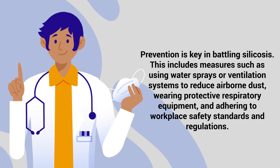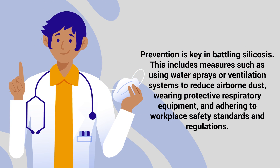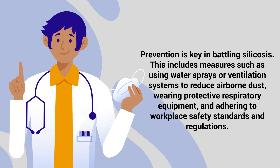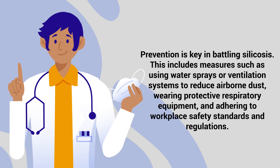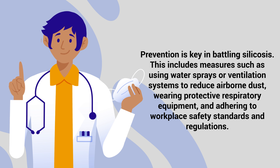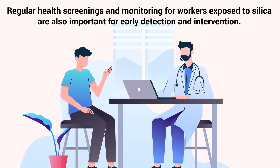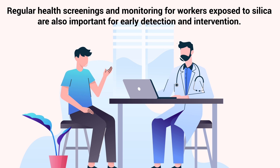Prevention is key in battling silicosis. This includes measures such as using water sprays or ventilation systems to reduce airborne dust, wearing protective respiratory equipment, and adhering to workplace safety standards and regulations. Regular health screenings and monitoring for workers exposed to silica are also important for early detection and intervention.